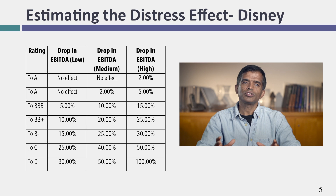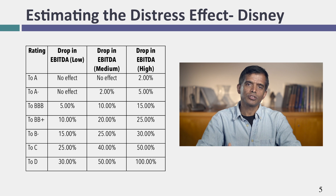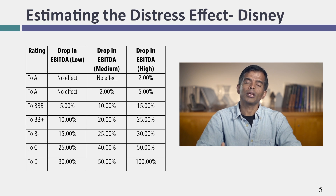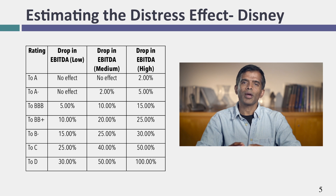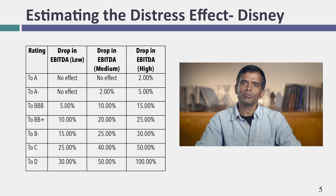The way indirect bankruptcy costs kick in is that as your rating drops, your operating income is affected. For Disney, until you get to single-A there's no indirect bankruptcy cost. But once you drop to A-minus, you start to see the first small impact. I've listed three possible scenarios — high, medium, and low impacts on operating income. For Disney, I went with the middle column, using that in recomputing the optimal debt ratio.